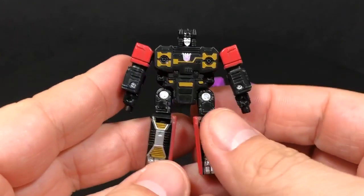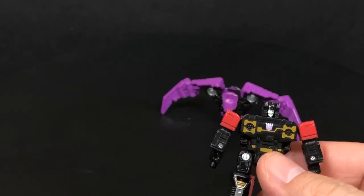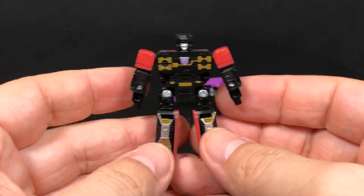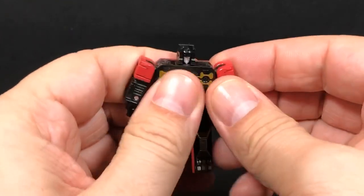We'll start off with Rumble real quick. The only thing that they come with in the package is their instructions. That's it and the figures themselves.